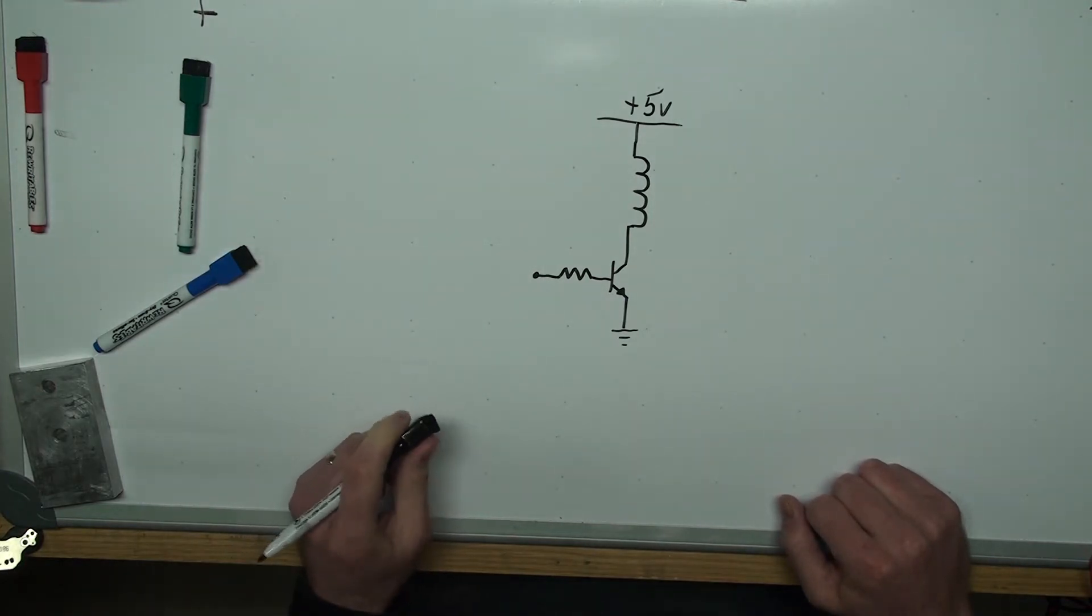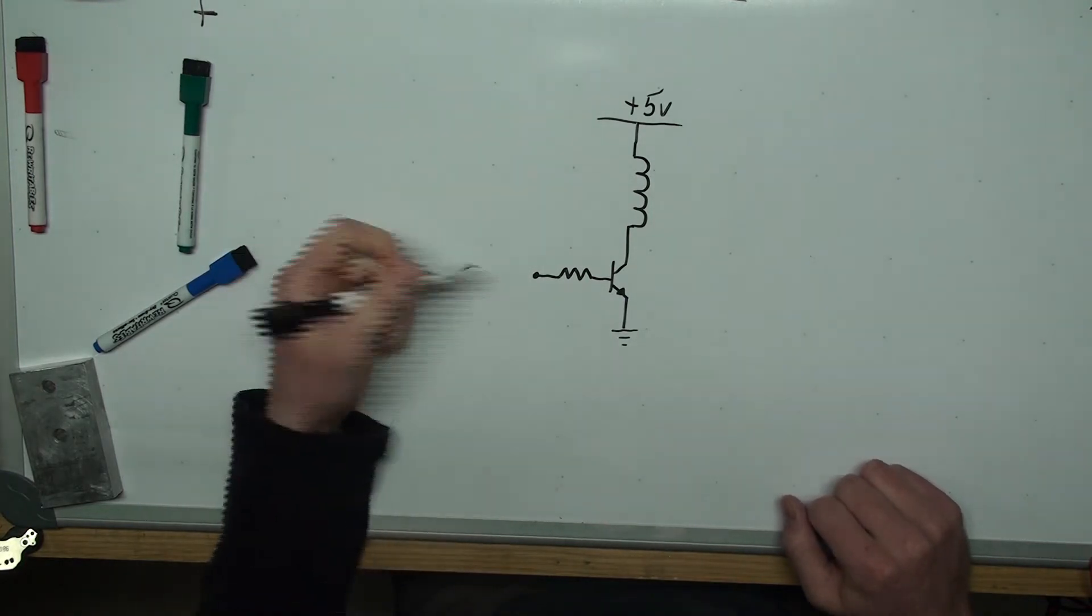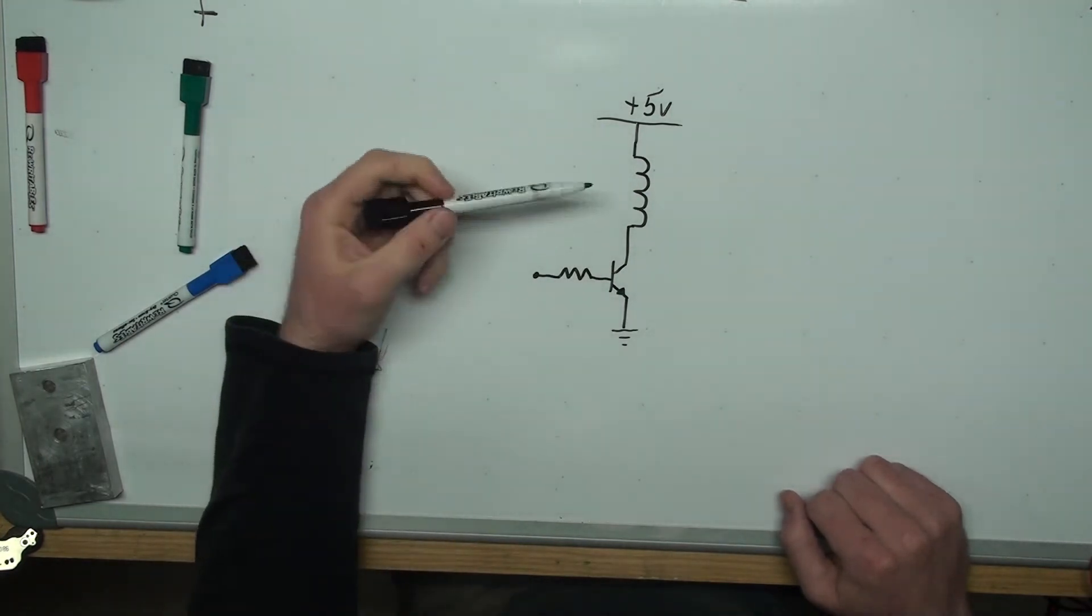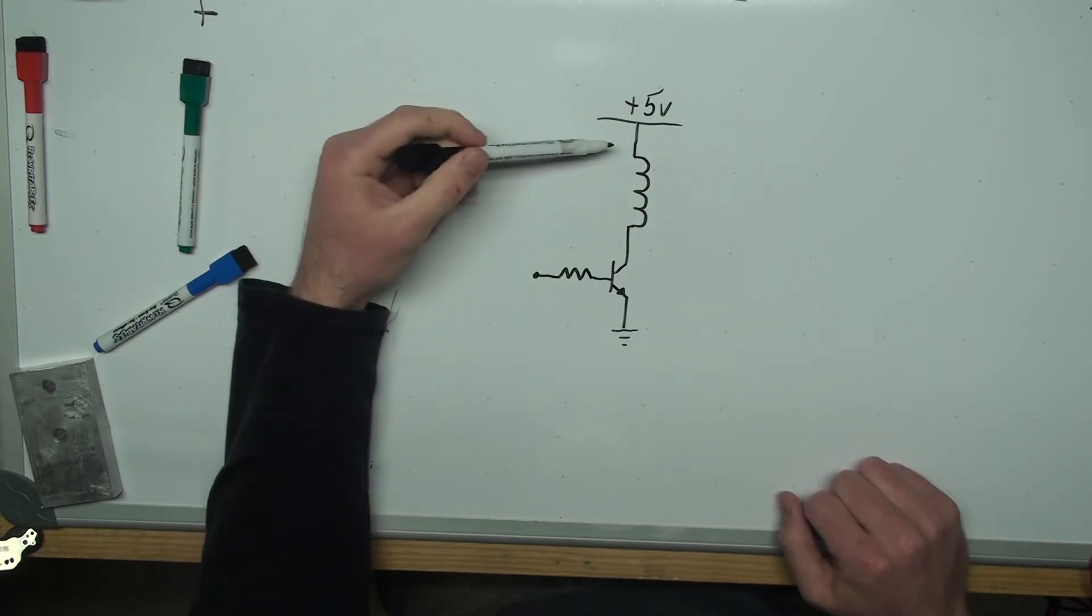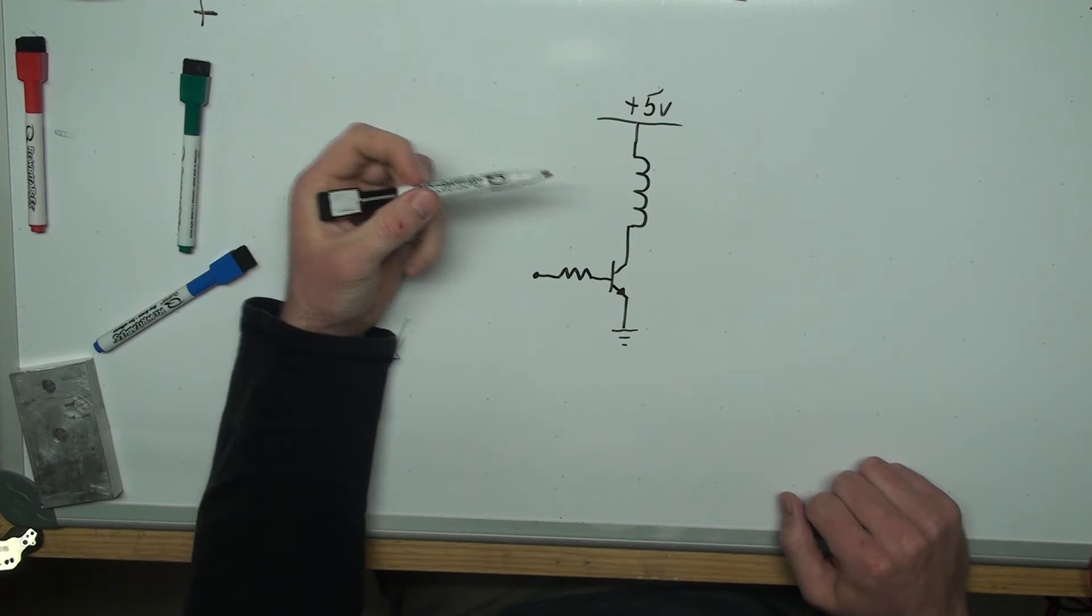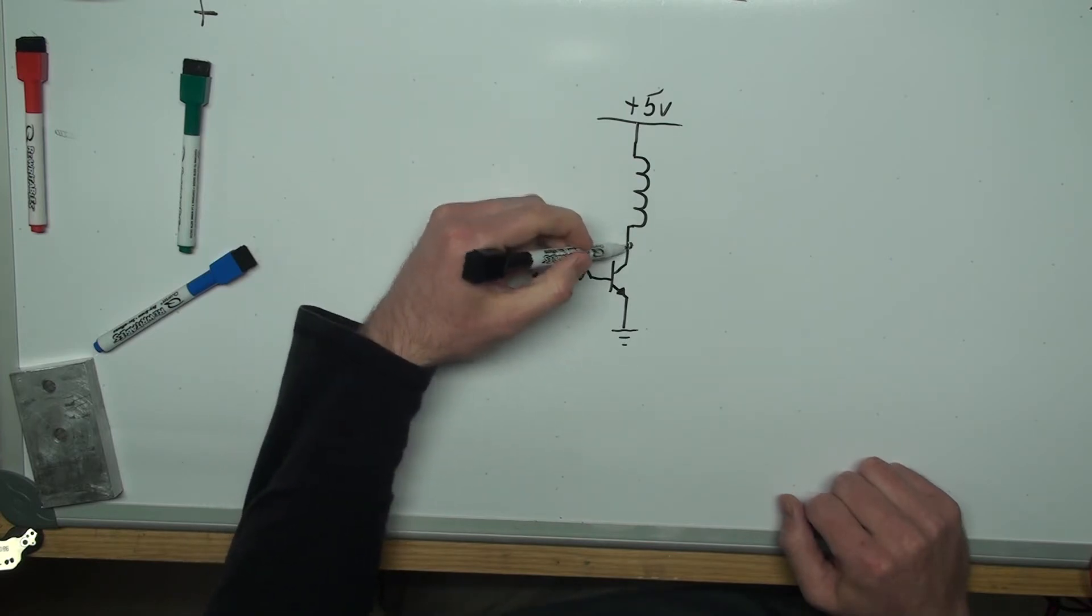I want to be using just an Arduino as a pulse generator to drive this motor load, but I want to show two examples. First will be just this straight example and the problem that you'll run into.